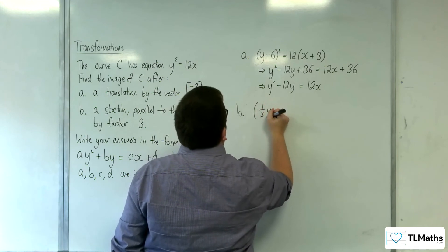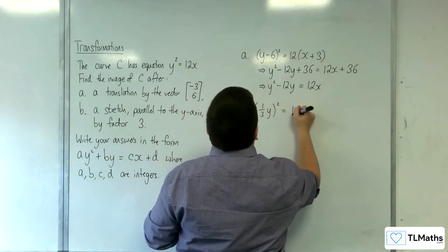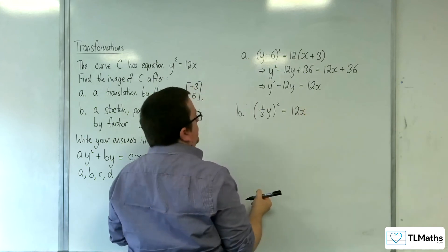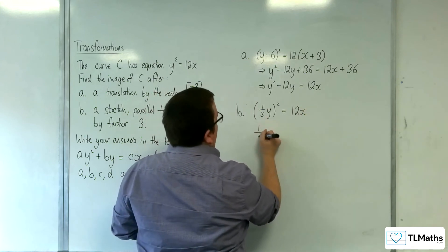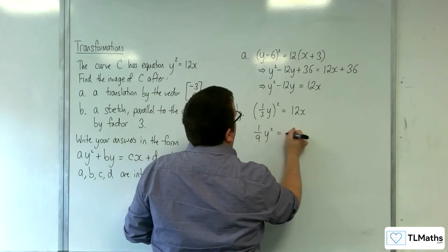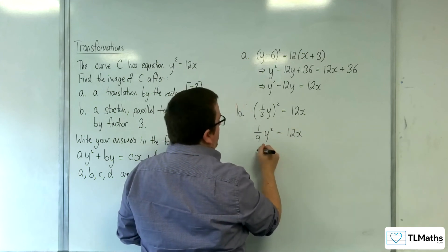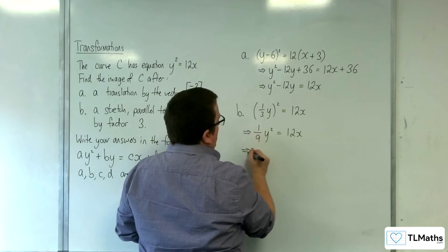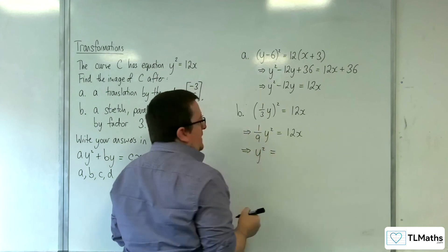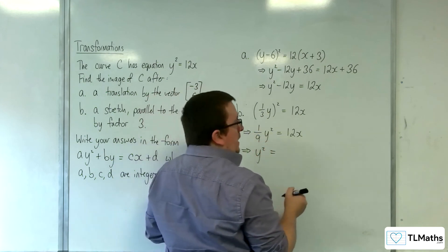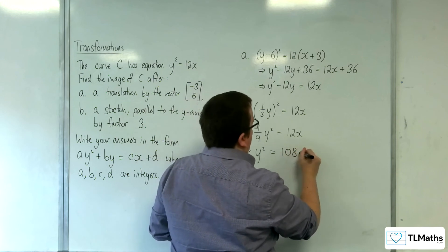So (y/3)² = 12x. So (1/9)y² = 12x. Multiply both sides by 9.